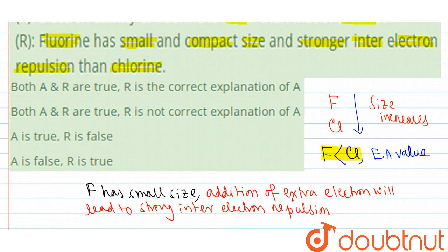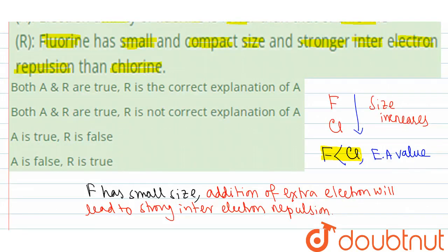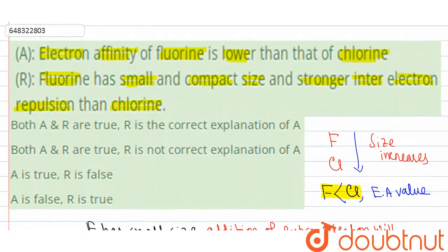So that means both A and R are true, and we can see that R is the correct explanation of A. So that means out of the given alternatives, the correct option will be the first one.